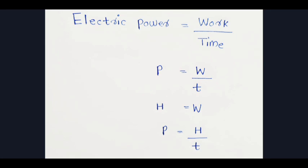Now let's go to the electric power equation. What is electric power? The amount of energy consumed by an electrical appliance in unit time. Electric power is equal to work by time. P is equal to W by T. This is work by time, which is heat energy. Then P is equal to H by T. That is the electric power equation.